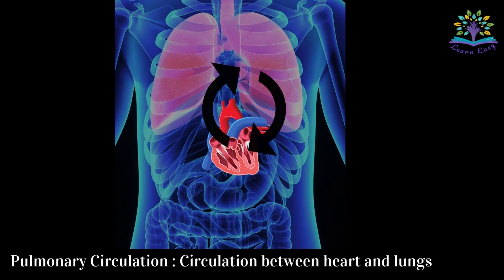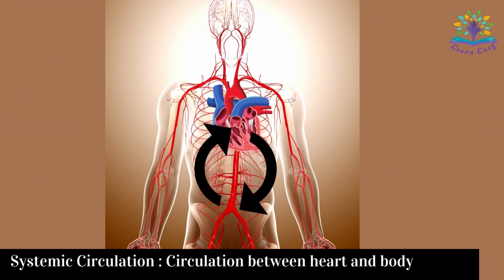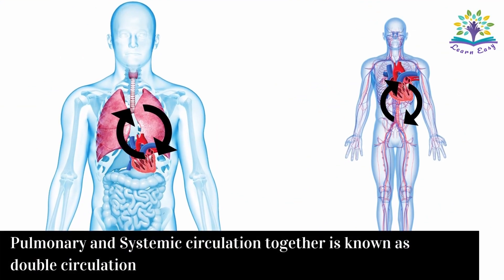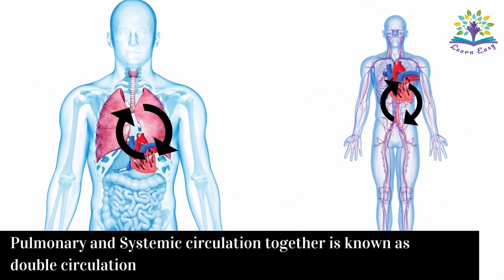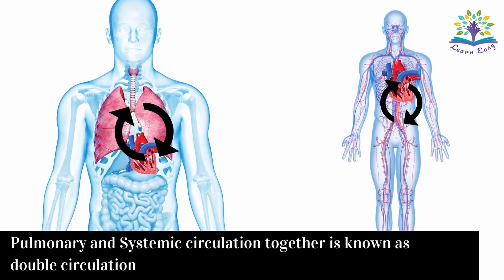The circulation that happens between the heart and the body using the artery, capillary, and vein is known as systemic circulation. The pulmonary circulation and systemic circulation are together known as double circulation.